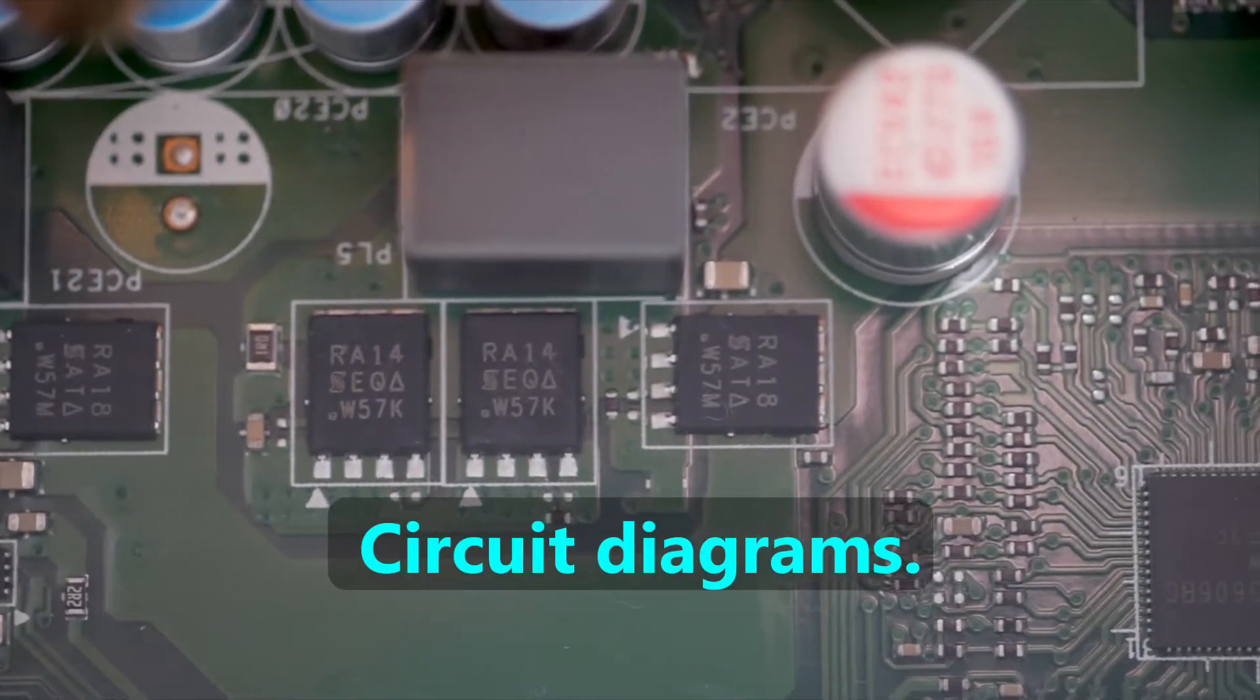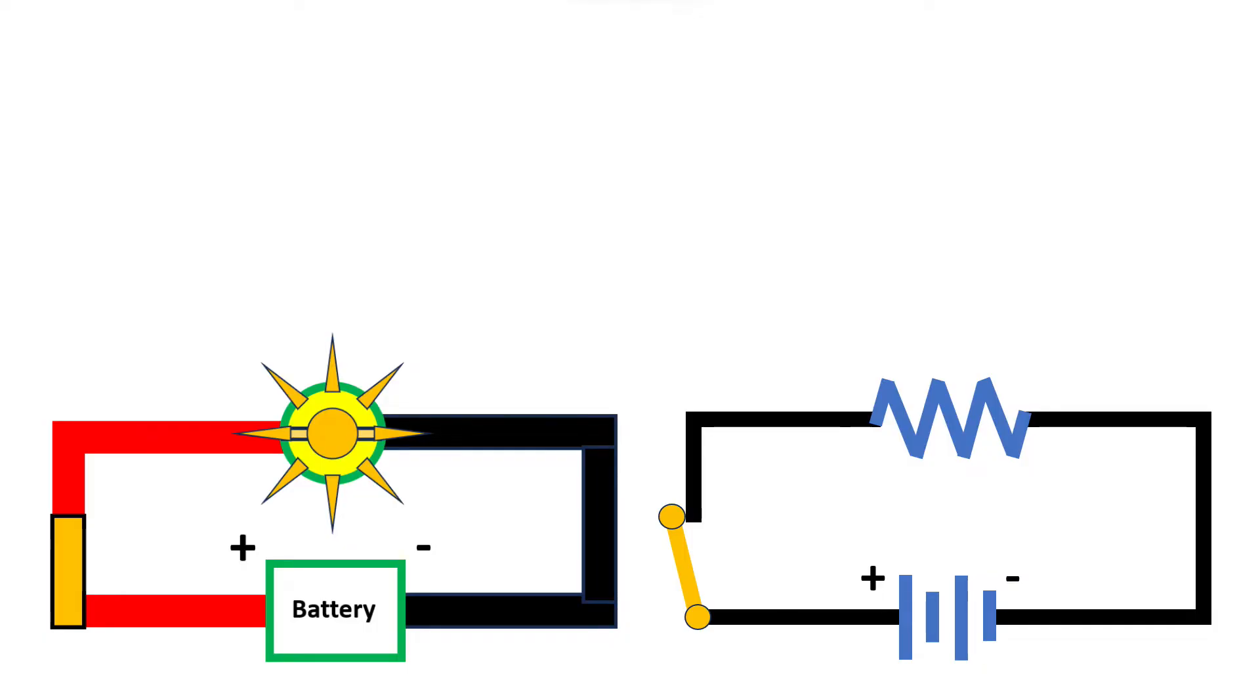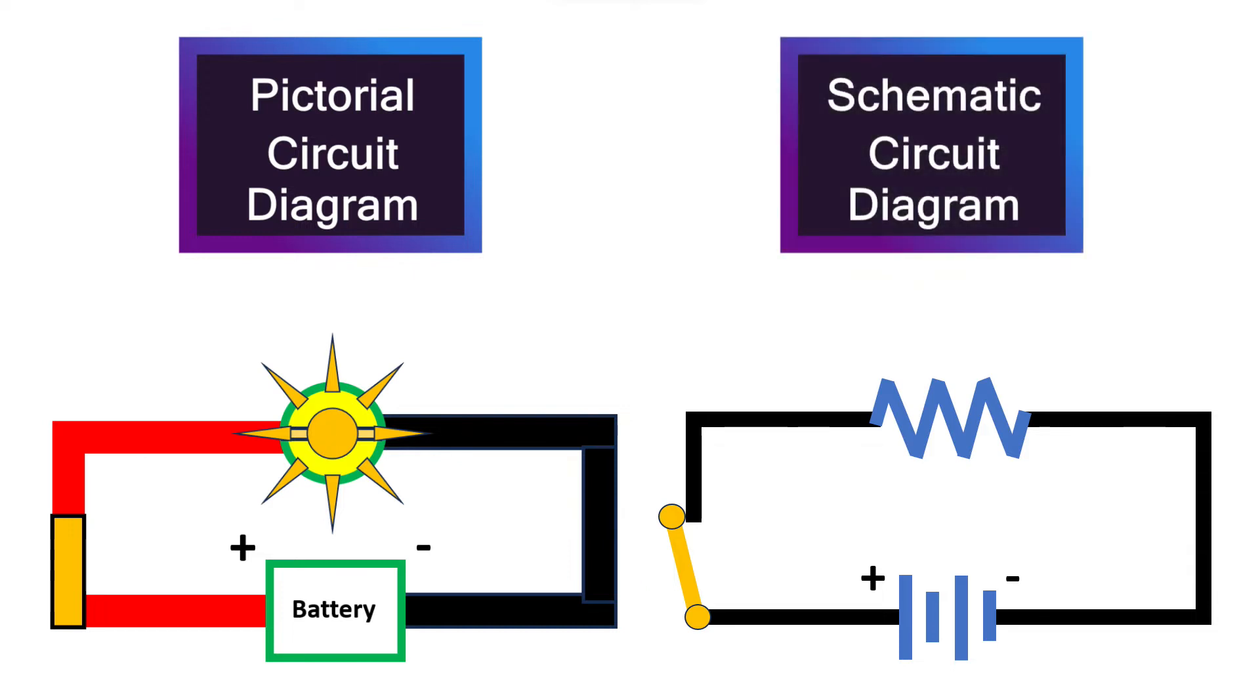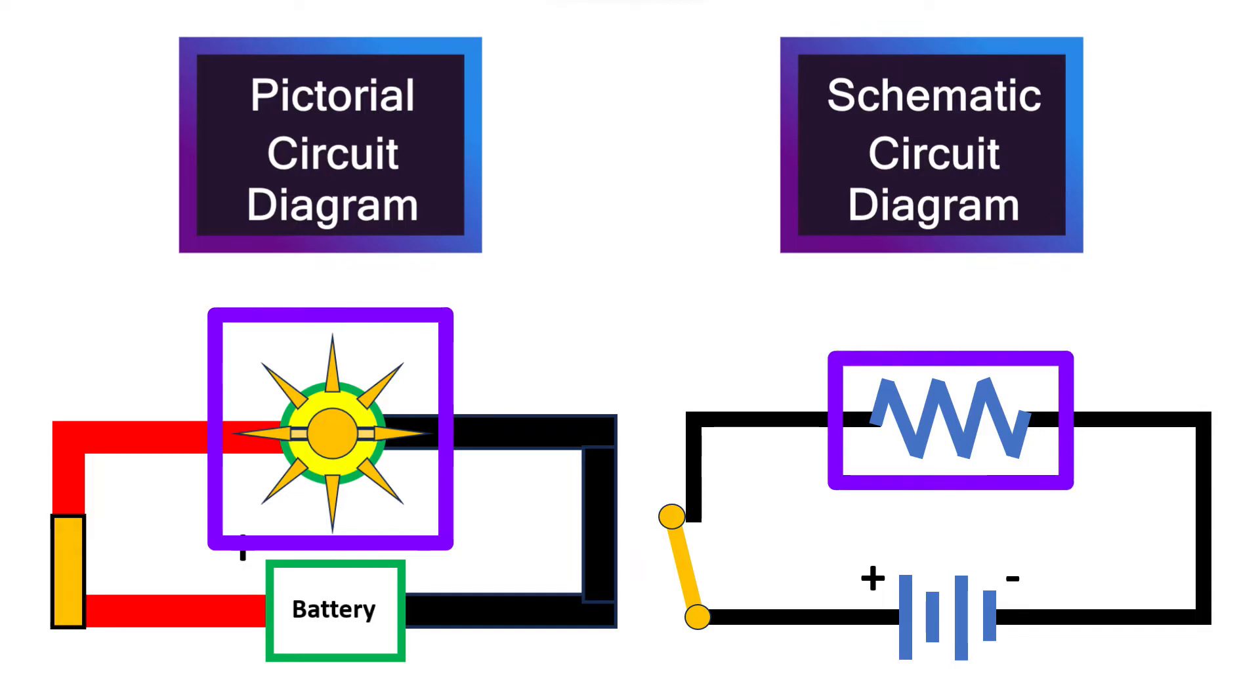Next, we'll introduce circuit diagrams. Although we can draw a circuit using detailed sketches of objects like we've done on the left, it's faster to use symbols, like we've done on the right. The drawing on the left is called a pictorial circuit diagram, and the one on the right is called a schematic circuit diagram. In both diagrams, we need to specify which side of the battery is the positive terminal so everyone will know which way the conventional current is flowing. Although there are symbols for specific objects like light bulbs, we frequently represent objects with just a zigzag line.